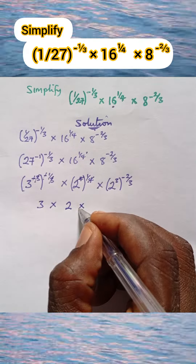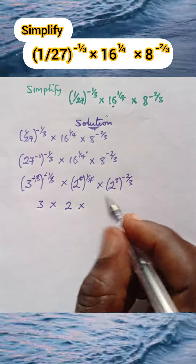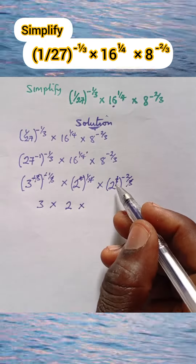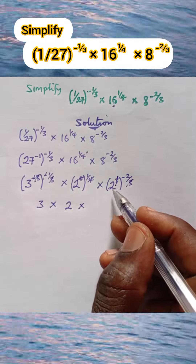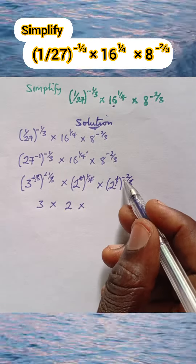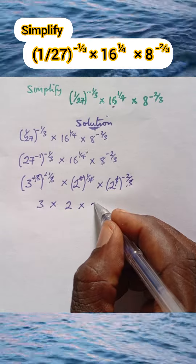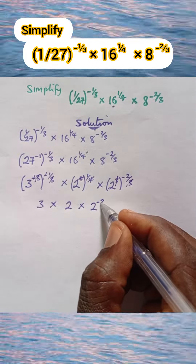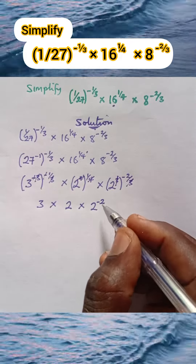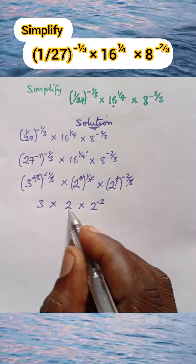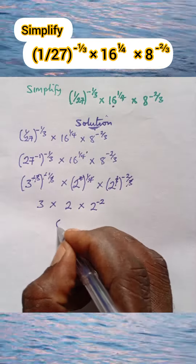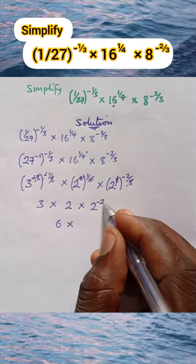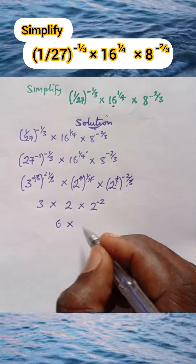Multiply by similarly, 3 cancels 3, and we are left with 2 raised to the power of negative 2. So we have 3 multiplied by 2 is 6, times 2 raised to the power of negative 2.